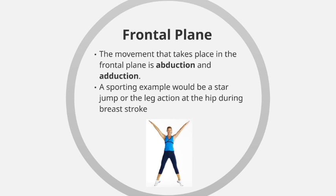Within the frontal plane, the movement that takes place is abduction and adduction. Abduction is taking the limbs away from the midline of the body, and adduction is adding to the midline of the body. A brilliant example from sport of movement within the frontal plane would be the star jump, or the leg action at the hip during the breaststroke.